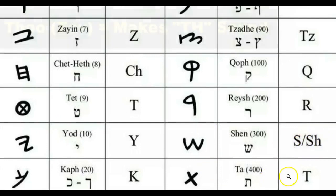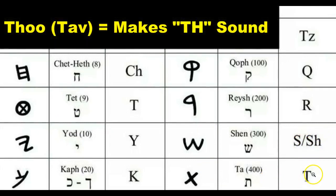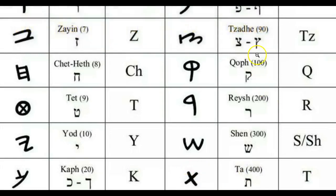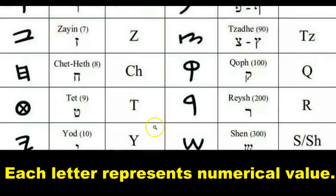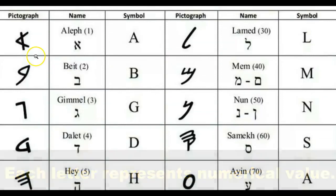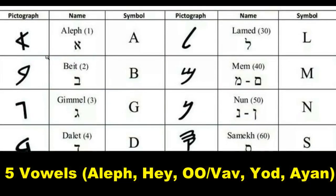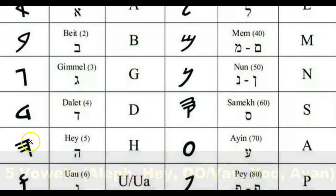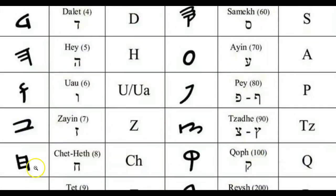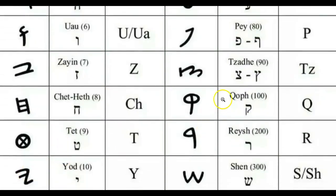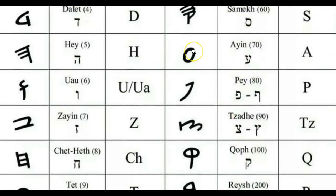The last letter makes the TH sound — it is the Thu, or Tav, which means mark, sign, or covenant. We also discussed how each letter has a numerical value, and we covered the five vowels: the Aleph, the He, the U, the Yad, and the Ayan. These five letters make up the vowels of the Yahudiath language.